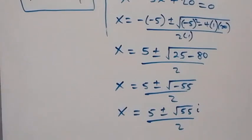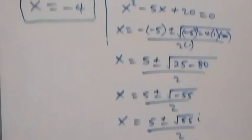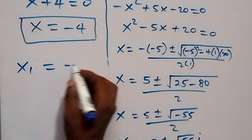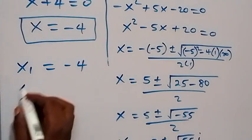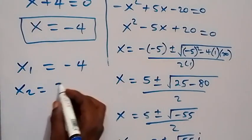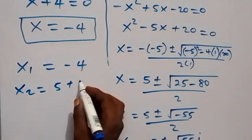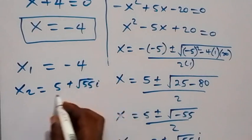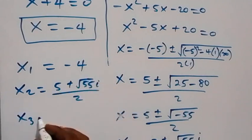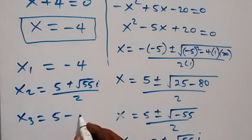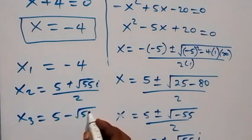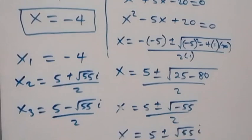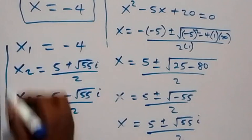We can now write out all the values of x. The first solution is x₁ equals minus 4. The second and third solutions are x₂ equals 5 plus root 55i over 2, and x₃ equals 5 minus root 55i over 2. So we have three solutions in this problem.